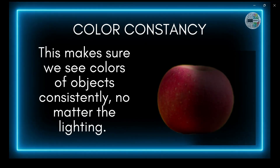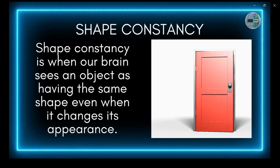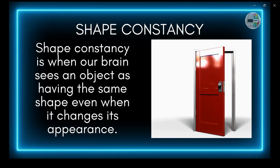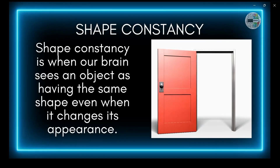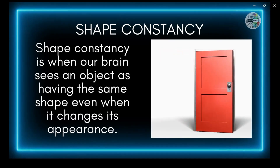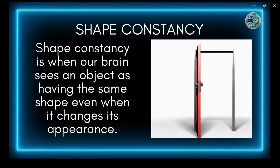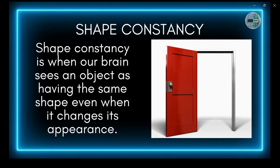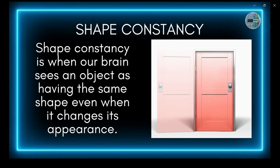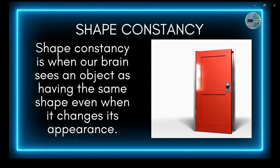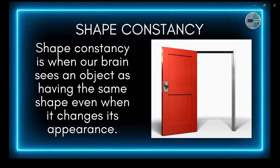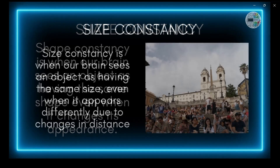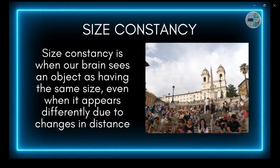Number two: shape constancy. Shape constancy is when our brain sees an object as having the same shape even when it changes its appearance. Imagine a door that's open and then closes — when open it looks tall and rectangular, and when closed it appears as a shorter, wider rectangle. However, in our head we still see it as the same door.